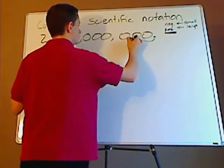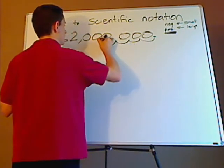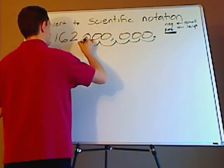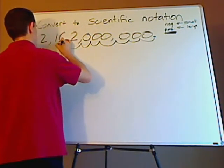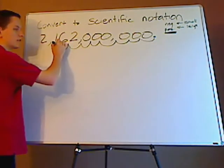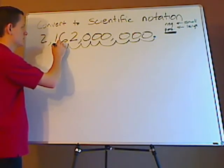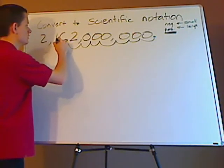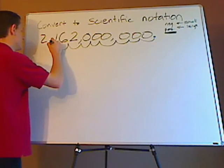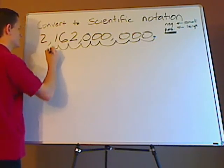So 1, 2, 3, 4, 5, 6, 7, 8. Now if I stop there, notice that would be 21.62, but it's not. So 8, 9, and I stop there. So that's 9.